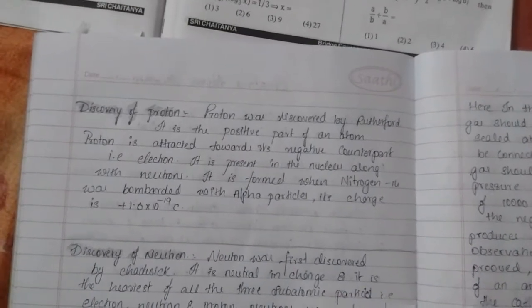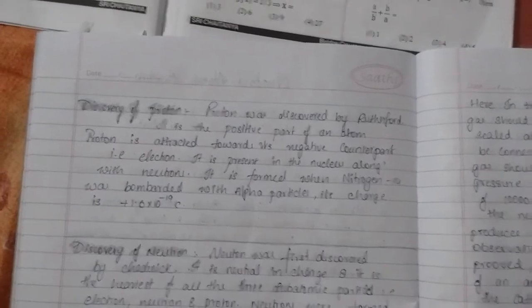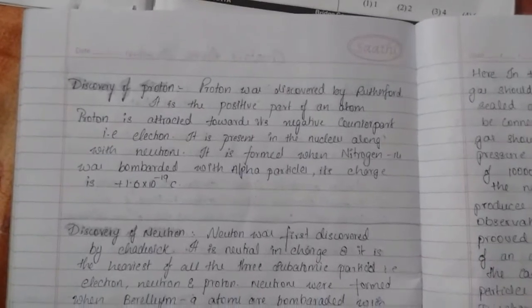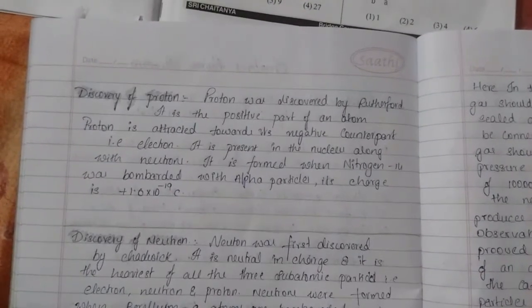Do you remember that the charge of the electrons is minus 1.6 into 10 power minus 19 coulombs? Therefore, the electron is negative and proton has a charge of positive. And on neutrons.